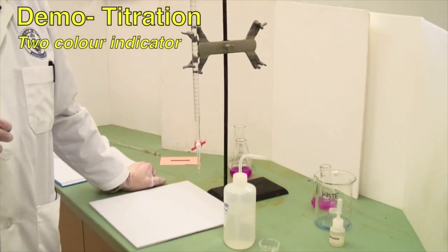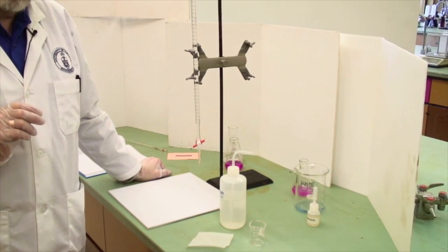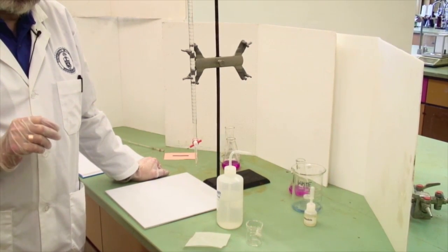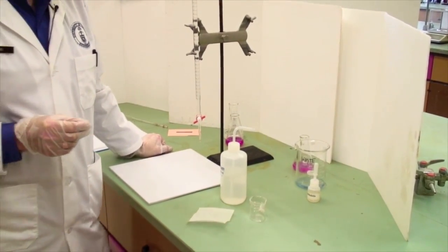We'll now do another titration using a different indicator. In this case it's a two color indicator, Bromacresol Green. And two color indicators you approach slightly differently.